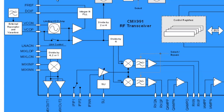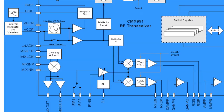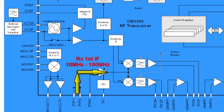On the receive side, an external LNA amplifies the RF signal and the CMX991 provides a control signal for the external LNA. The RF signal from the external LNA is applied to the differential input of the CMX991 first-stage RF mixer. The external RF receive LO can be applied as a differential or single-ended input. The RF mixer outputs can be switched between two different paths, allowing use of different external IF filters to support radio channels with different channel bandwidths. The first received IF can be in the range of 10 MHz to 150 MHz.